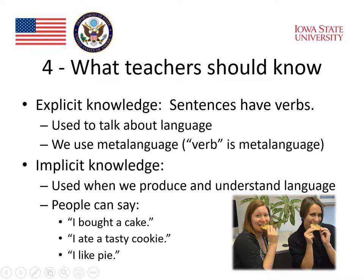The distinction between explicit knowledge and implicit knowledge is extremely important for teaching. Explicit knowledge means that you have the knowledge you need to talk about language, so you can say things like 'sentences have verbs' — a statement we could make about language. It is used to talk about language, and so it's called meta-language. Meta means above or outside of language, so the word 'verb' itself is an example of meta-language.